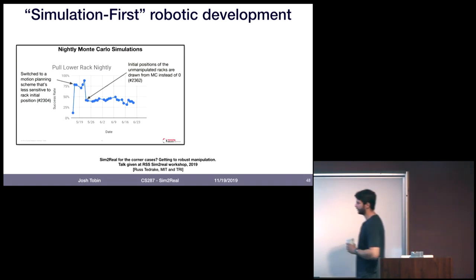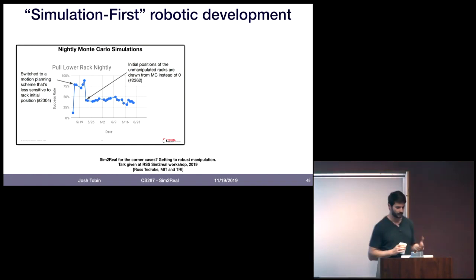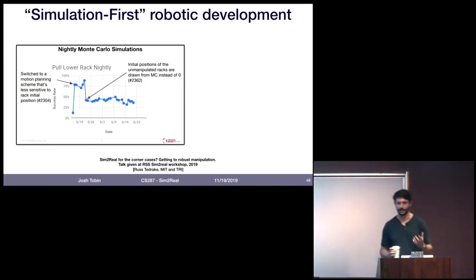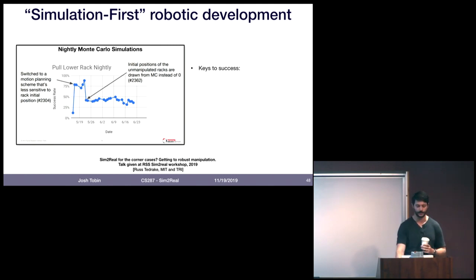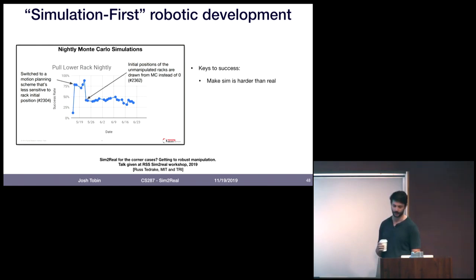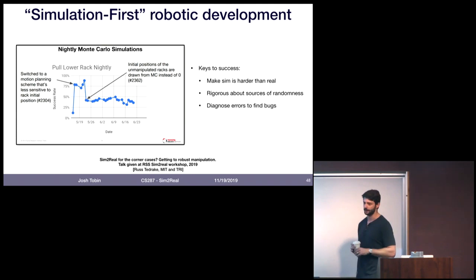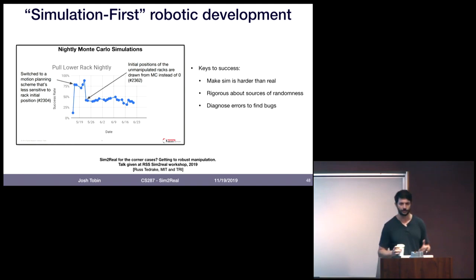Another example is the approach from Russ Tedrake's group at Toyota Research Institute — simulation-first robotic development. They have a bunch of tests that run in simulation every night to make sure any code changes pushed during the day don't degrade robot behavior. The keys to success they've mentioned: making the simulation harder than the real environment, being rigorous about sources of randomness so you know performance degradation isn't just bad luck with a random seed, manually going through errors to find bugs, and ensuring good contact simulation.